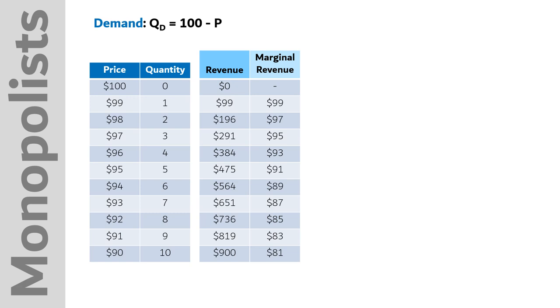The marginal revenue of the second unit is only $97 because while we gain $98 selling the second unit, we lose $1 because we drop the price of the first unit as well. Because we have to lower the price for all units when we increase production, marginal revenue falls faster than the price.